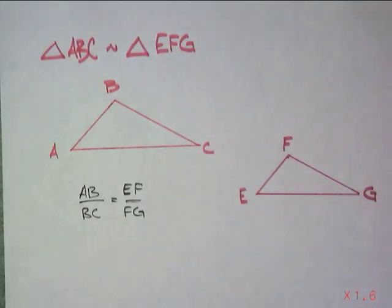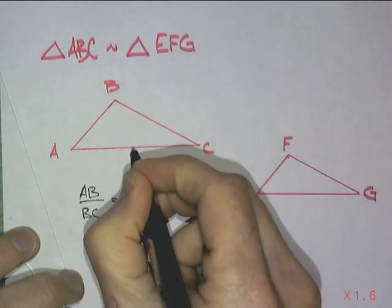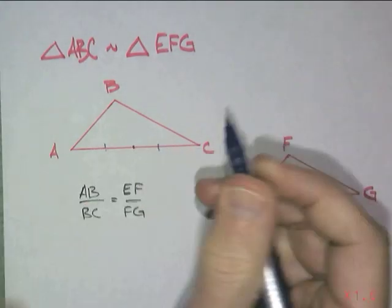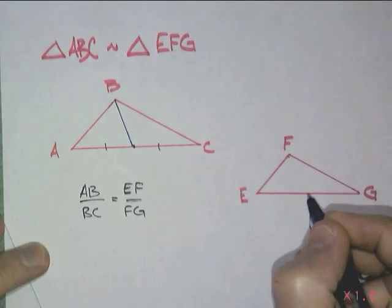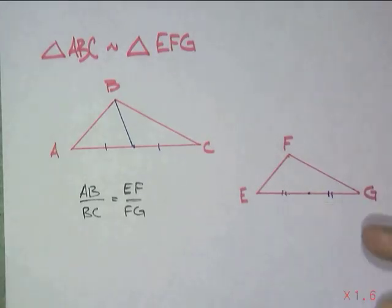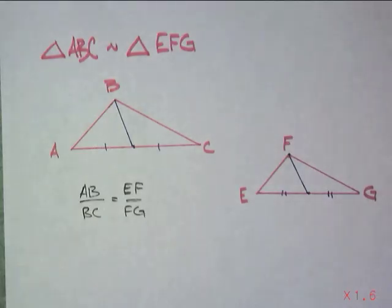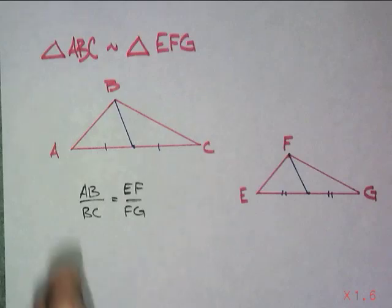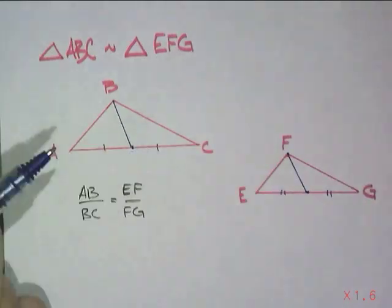Now if I were to create a median of this triangle and a median of the other triangle, they would not be equal, but it stands to reason that they are also in that same ratio. Because this is just a dilation of the other triangle, one way or the other.